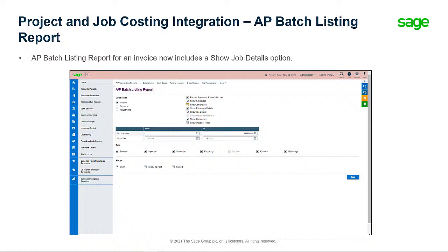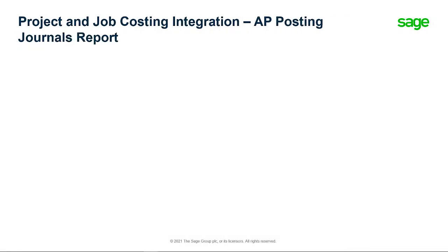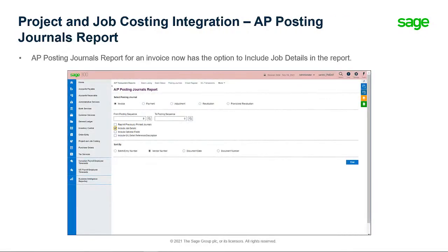For an invoice, the Accounts Payable Batch Listing report now includes a Show Job Details option. Similarly, the Accounts Payable Posting Journals report for an invoice also gives you the option to include job details in the report.